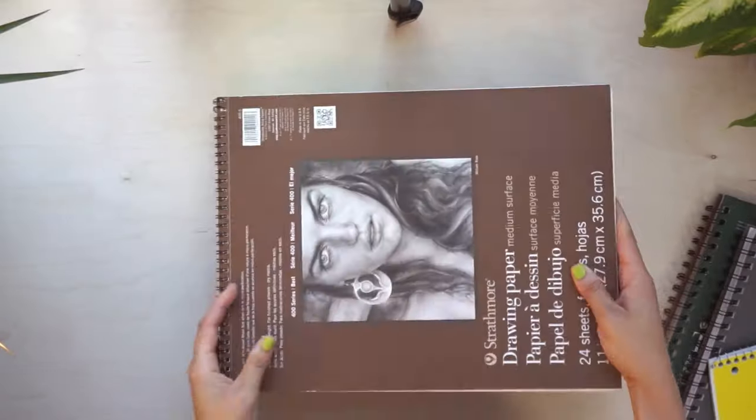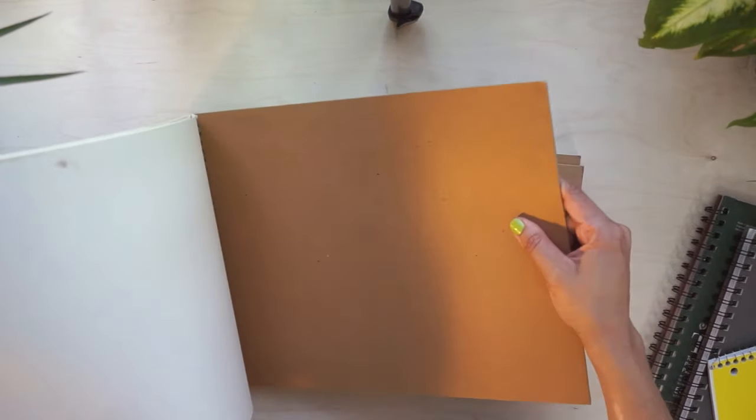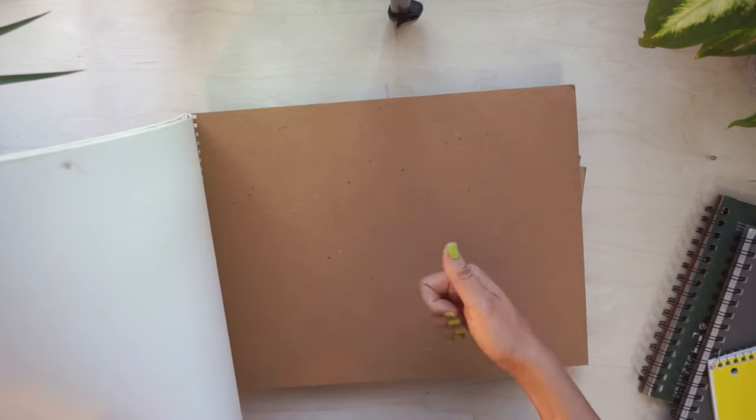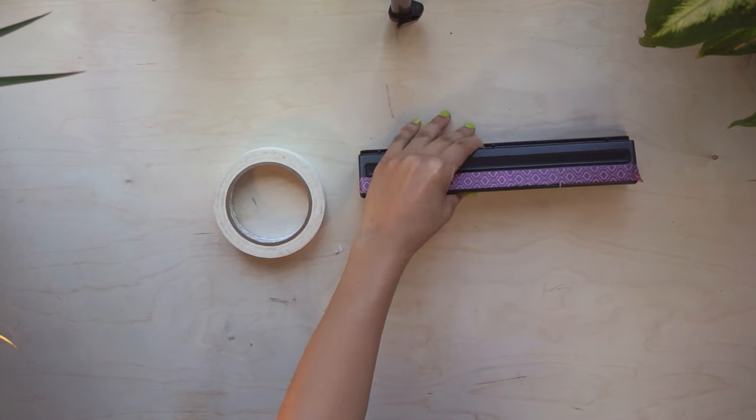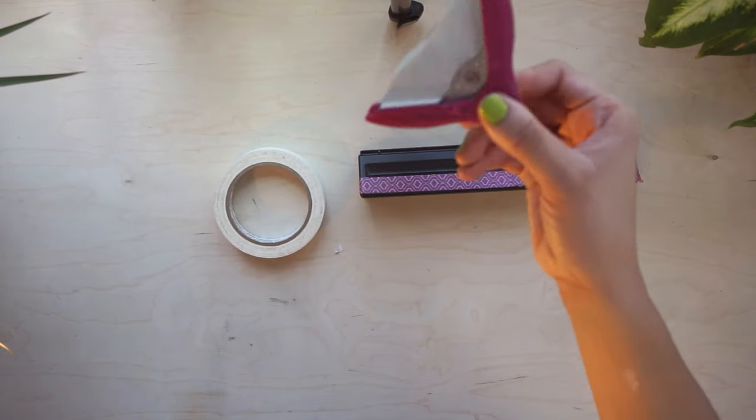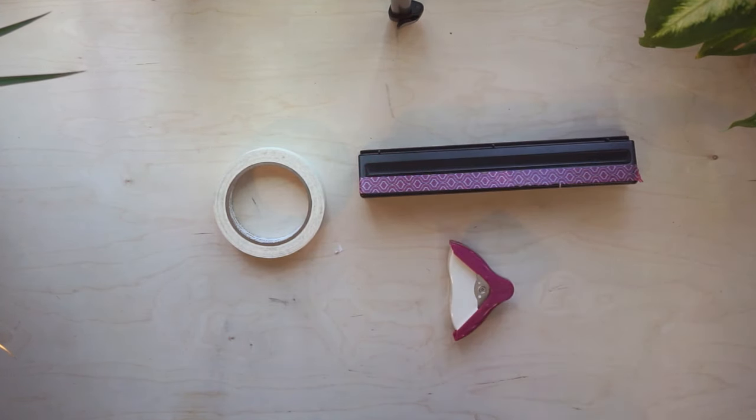You'll also need a cover material. It can be mat board, scrap, cardboard, or the back of an old sketchbook. I used the back of this sketchpad since it was sturdy. You'll also need a hole punch, some tape, and an optional corner rounder to make the pages look a little nicer. When you've got all that, let's get started!